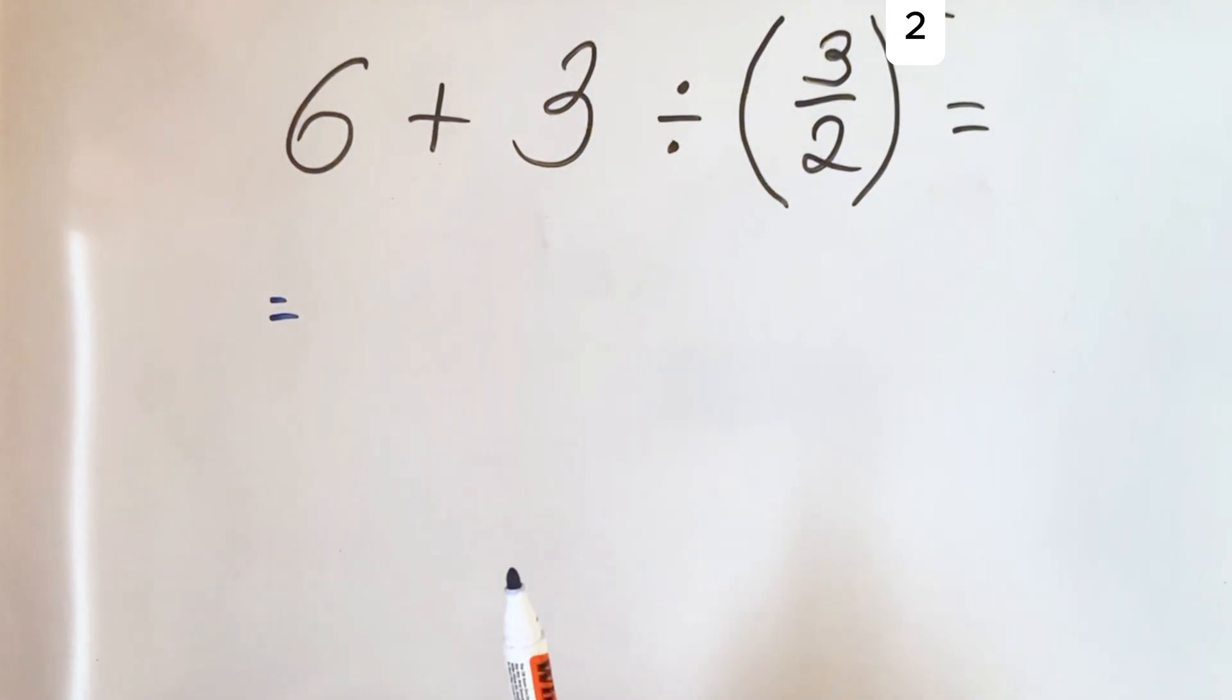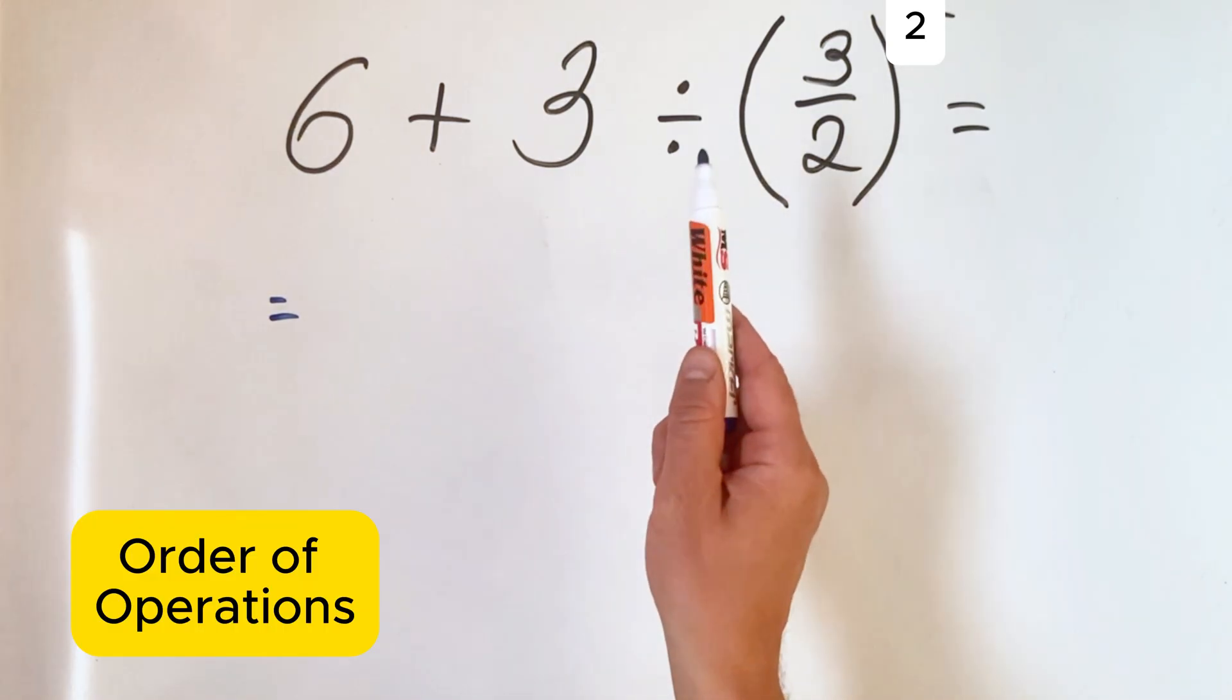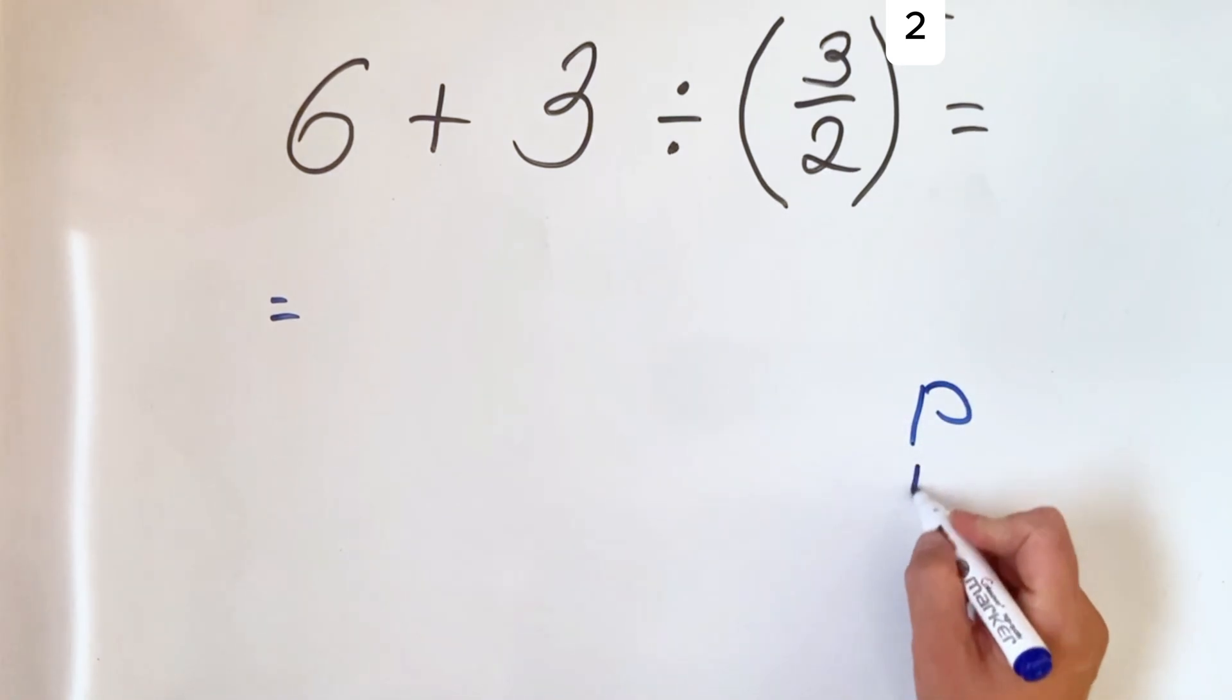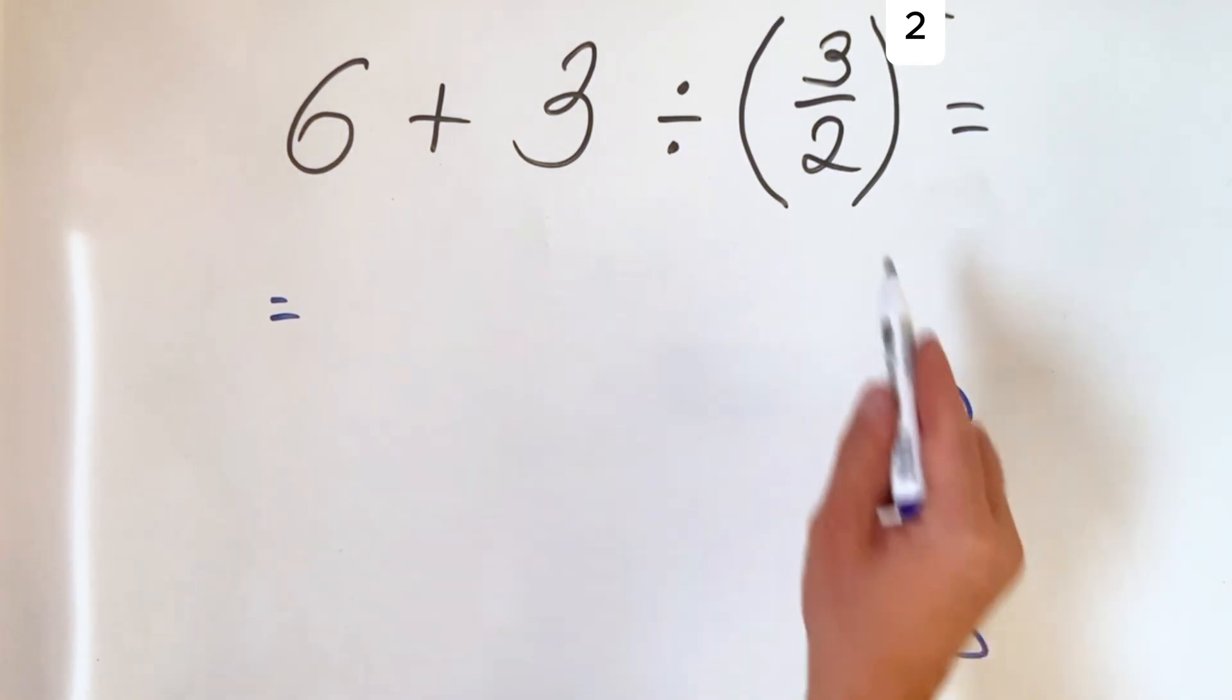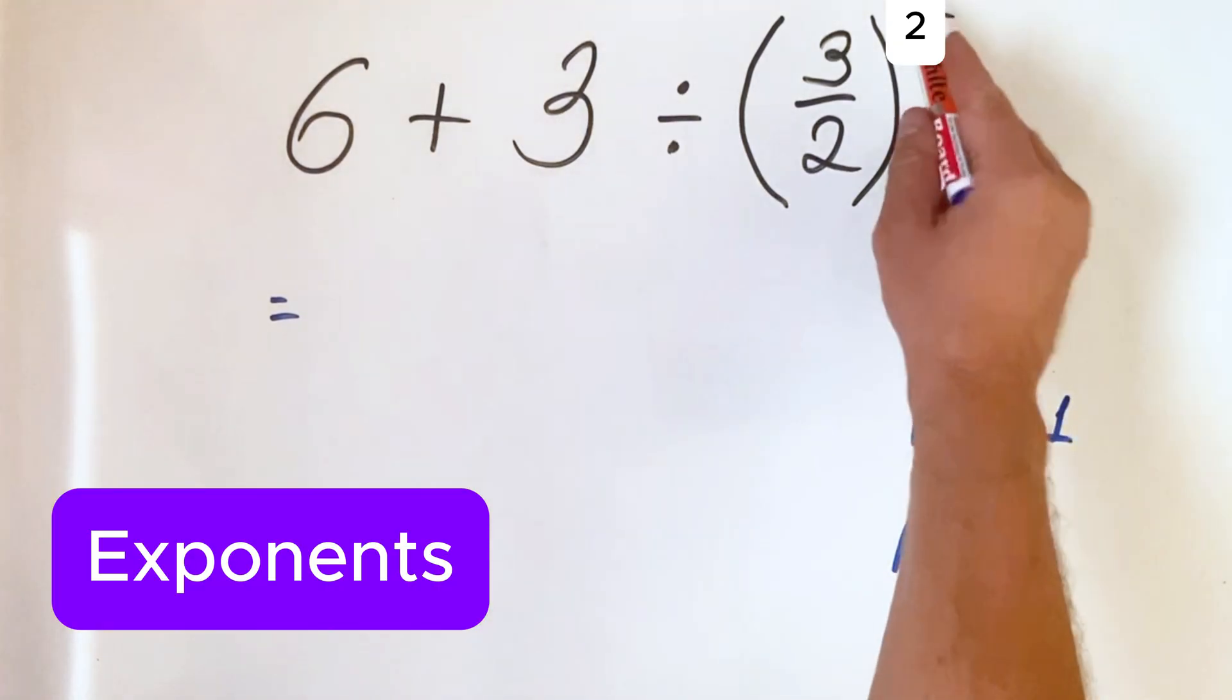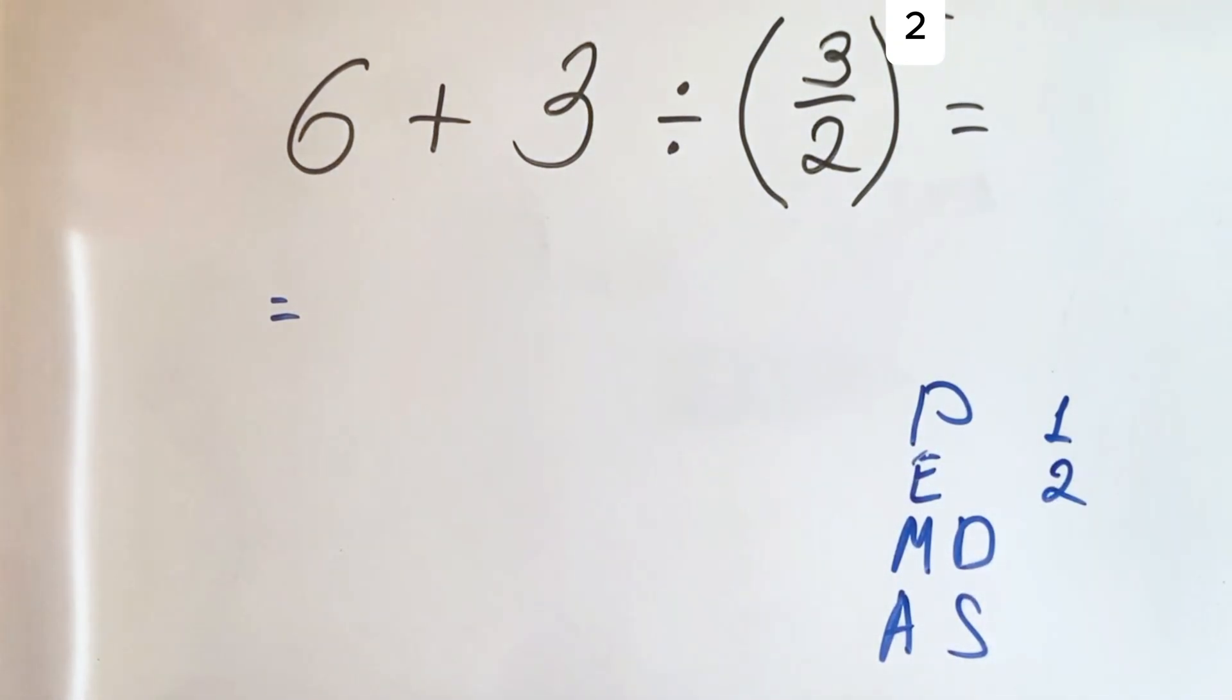To solve this equation, we must remember the rules of the order of operations. In this case it's PEMDAS, where P stands for parentheses and we always do it first. E stands for exponents, which goes in the second place.